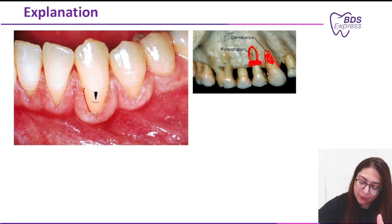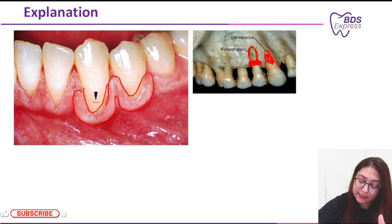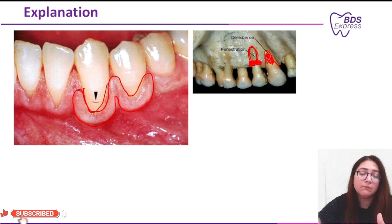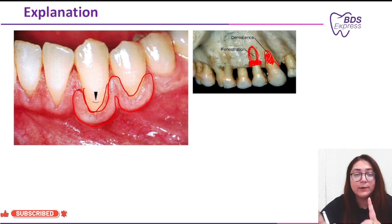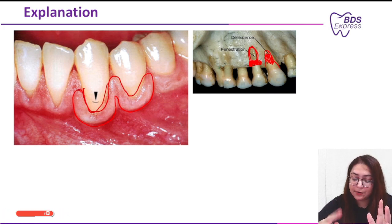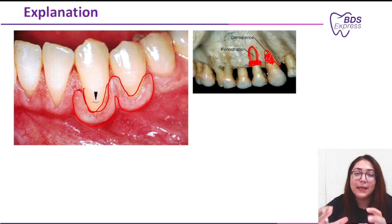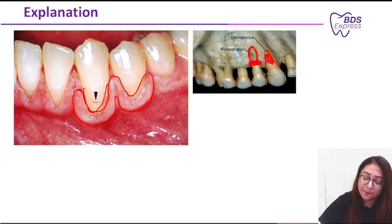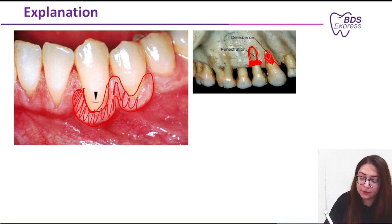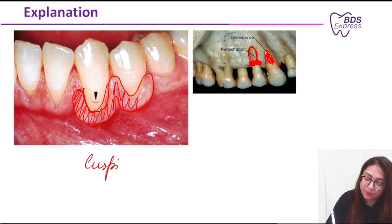Along with the dehiscence, what you are seeing is a rolled border. This condition is specifically seen in premolars and canines. In the question also, it was mentioned the canine region. So this is your McCall's festoon or McCall's festoons, also known as gingival festoon. The location is cuspid and premolars.